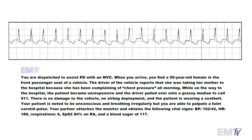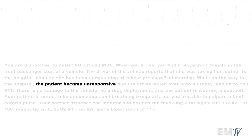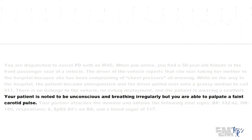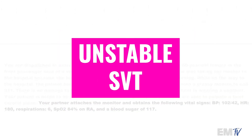There's no traumatic injury involved. Our patient is unresponsive — so they are definitely altered. There's no damage to the vehicle, so no trauma. Patient is unconscious, breathing irregularly, but you can feel a carotid pulse. The partner attaches the monitor and gets the following vital signs: BP 102 — so technically not hypotensive; respirations of 6 — so they are dyspneic; and SPO2 is 84% on room air. My diagnosis: this patient has an unstable SVT.